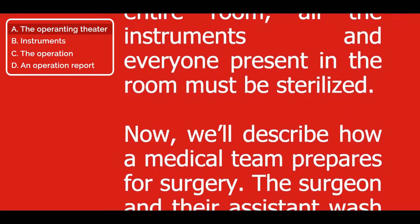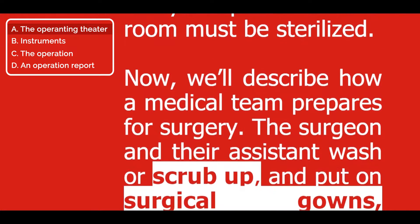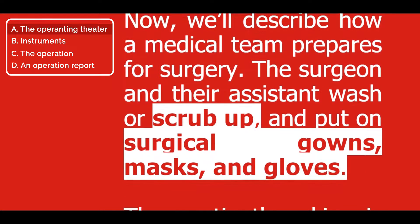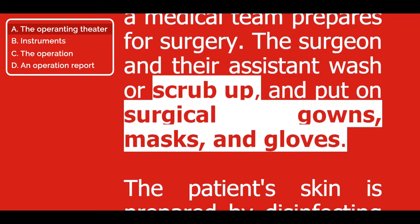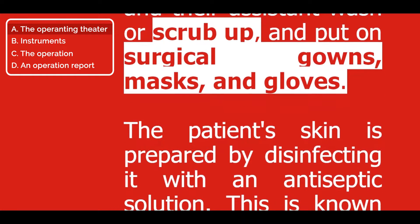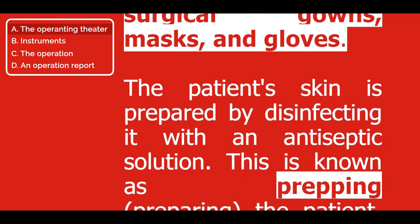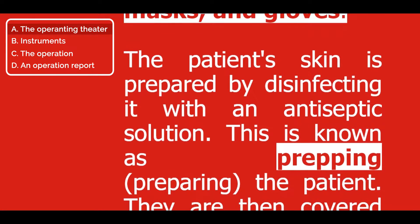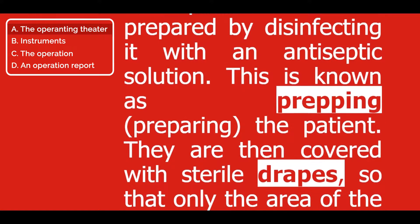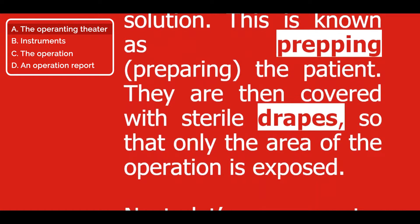We'll describe how a medical team prepares for surgery. The surgeon and their assistant wash or scrub up and put on surgical gowns, masks, and gloves. The patient's skin is prepared by disinfecting it with an antiseptic solution. This is known as prepping, preparing the patient. They are then covered with sterile drapes so that only the area of the operation is exposed.